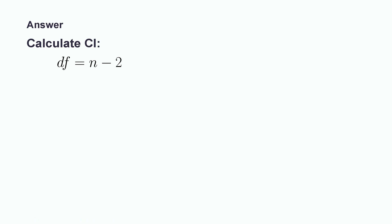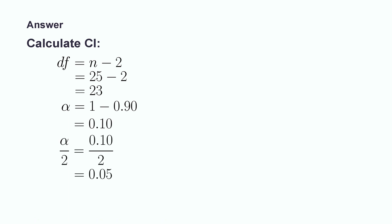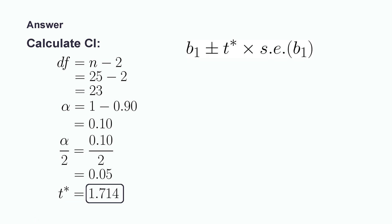We must now find the value of t-star. To do this, we need to calculate the degrees of freedom as well as alpha over 2. Because we know there are 25 clients, we compute the degrees of freedom by subtracting 2 from 25, giving us 23. In order to compute alpha over 2, we first compute alpha. Since we are computing a 90% confidence interval, alpha is 1 minus 0.90, which gives us 0.10. Dividing by 2, we get 0.05. We now use our t-table and find the value with 23 degrees of freedom and 0.05, giving us a t-star value of 1.714.